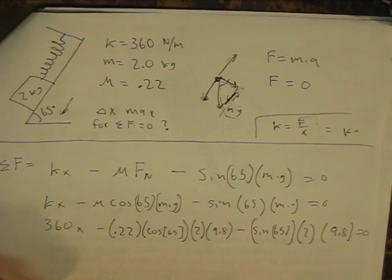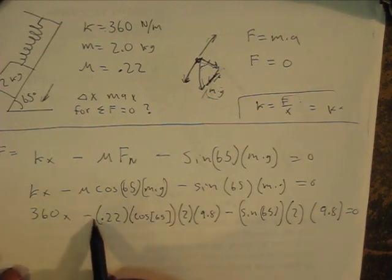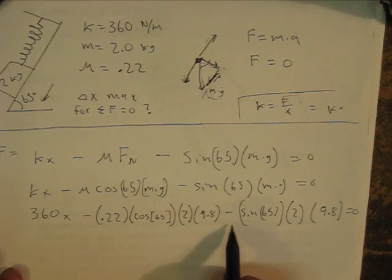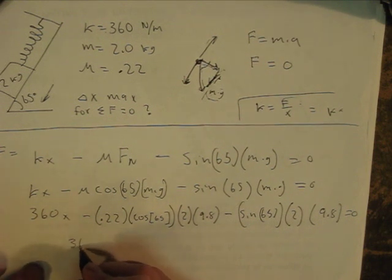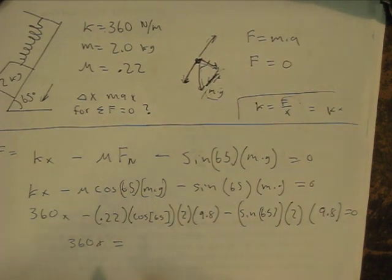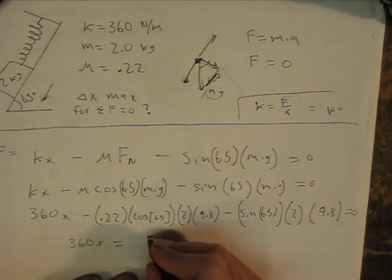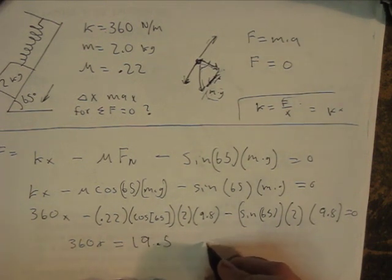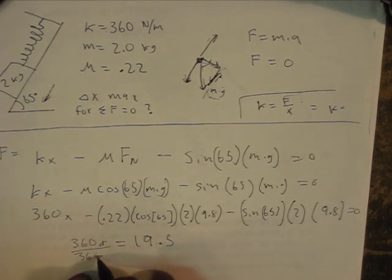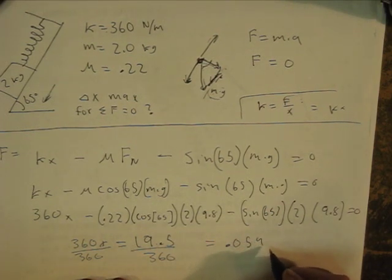So if we want to simplify that even further, let's just take these two right here and put them on the other side. So we would add this to the zero side and add this to the zero side, since they're both negatives. So it would be 360x equals, and if you go ahead and put that in your calculator, and you put them on this side and simplify it, you're going to get 19.5. And then just divide by 360, divide by 360, you're going to get .054, blah, blah, blah.